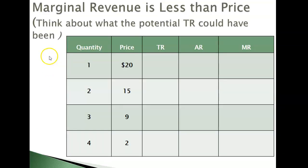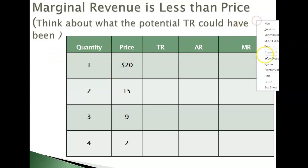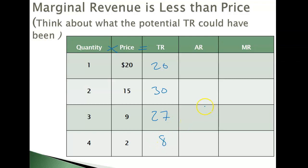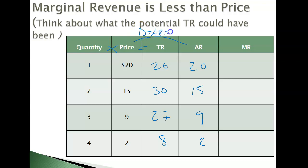Here we have our table with price and quantity. We multiply across to get total revenue: 1 × 20 = 20, 2 × 15 = 30, 3 × 9 = 27, and 4 × 2 = 8. Average revenue is total revenue divided by quantity: 20/1 = 20, 30/2 = 15, 27/3 = 9, 8/4 = 2. We notice that price and average revenue are still the same, so we still have D = AR = P.